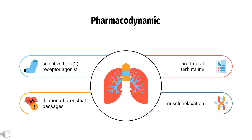Pharmacodynamics. Bambuterol is a long-acting beta-2 adrenoceptor agonist used in the treatment of asthma. It is a prodrug of terbutaline. Bambuterol causes smooth muscle relaxation, resulting in dilation of bronchial passages.